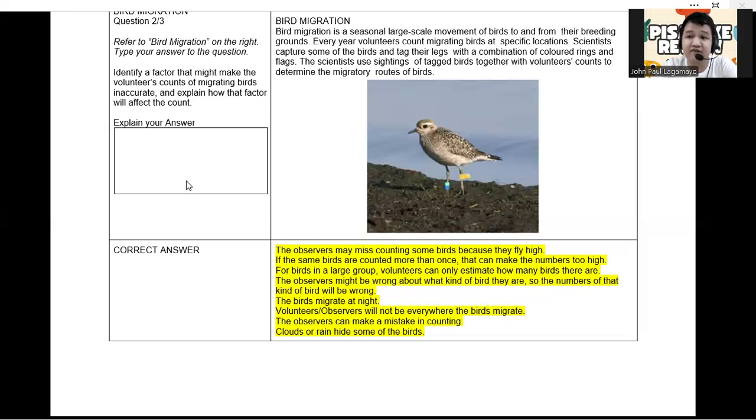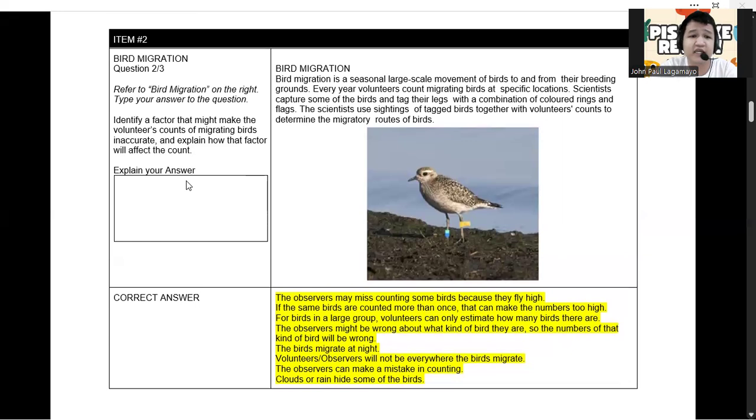Poor weather can obscure visibility, making it difficult for observers to see and accurately count the birds. So these are the underlying factors why there's a possibility that volunteers' counts may be inaccurate, most specifically if they are just using their eyes in counting the number of bird species that are flying above the sky. So that is for item number two.